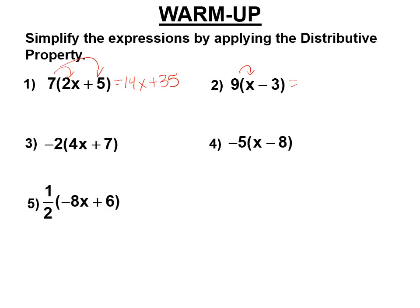9 times x is 9x, times negative 3 is negative 27. So this becomes 9x minus 27.